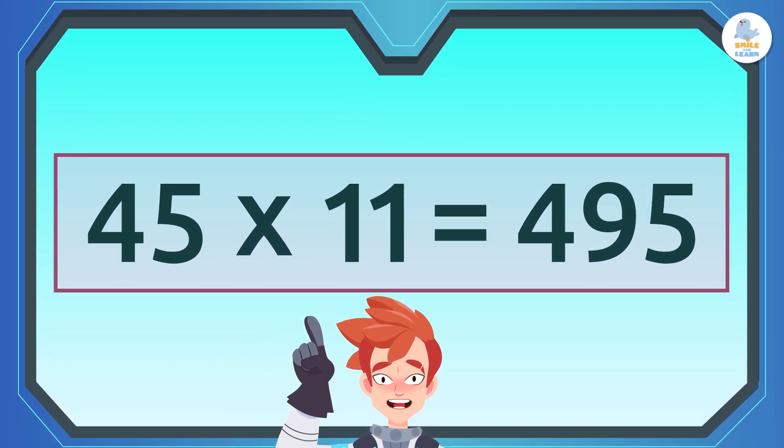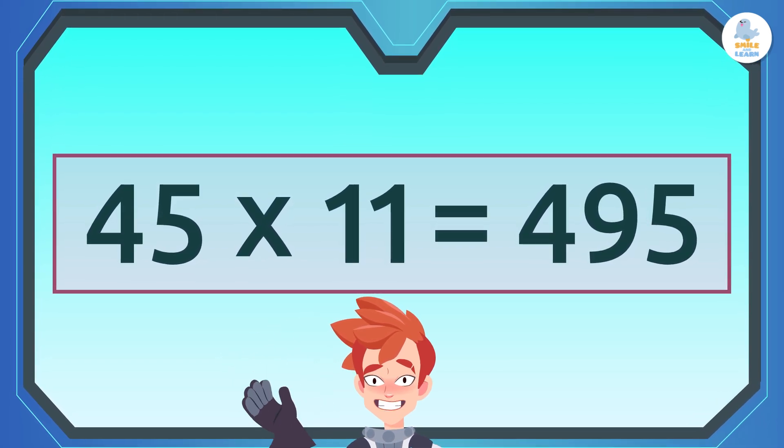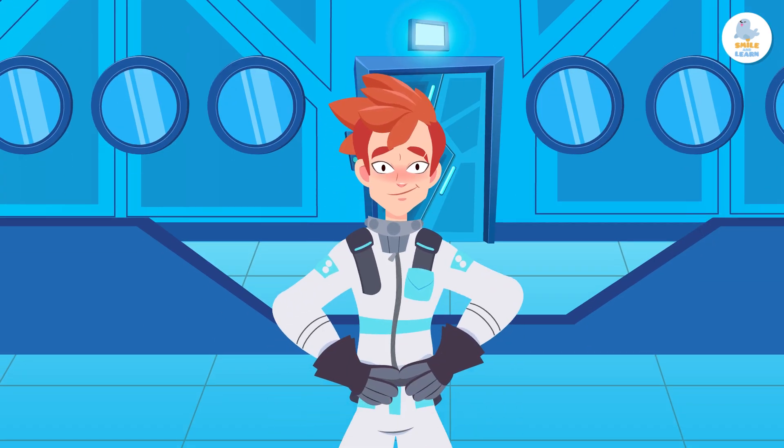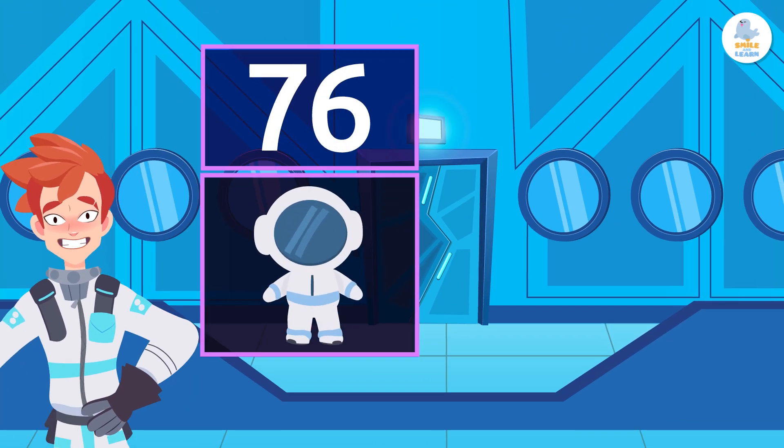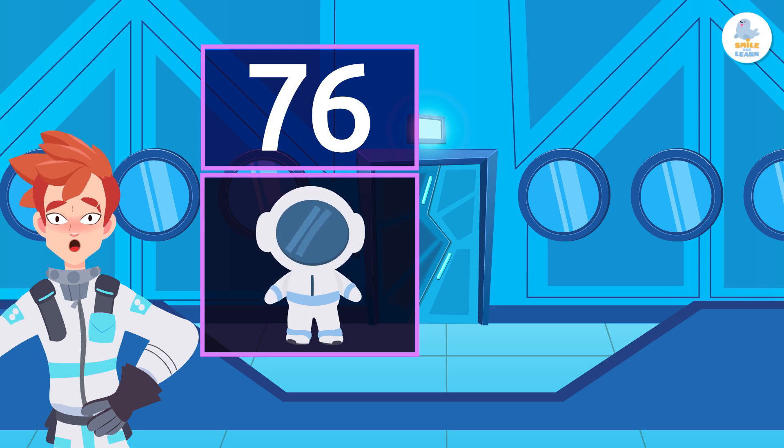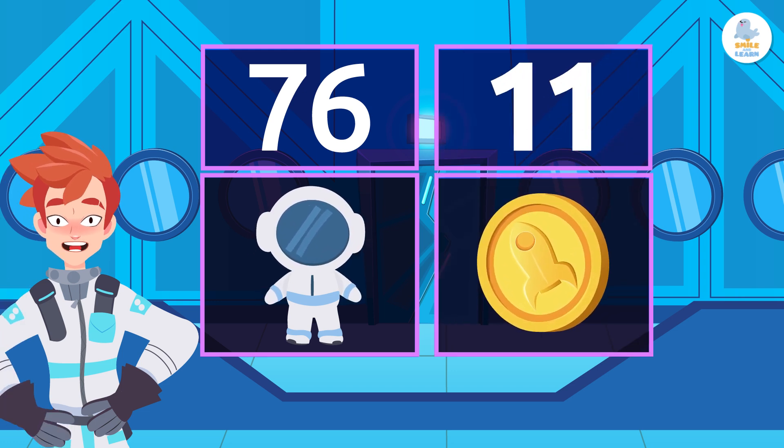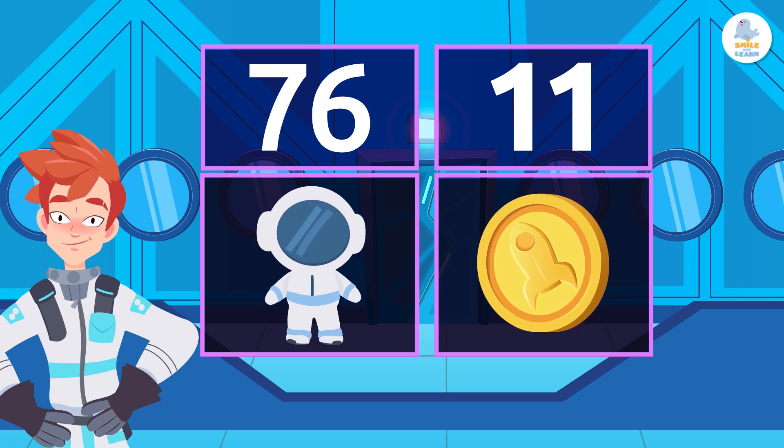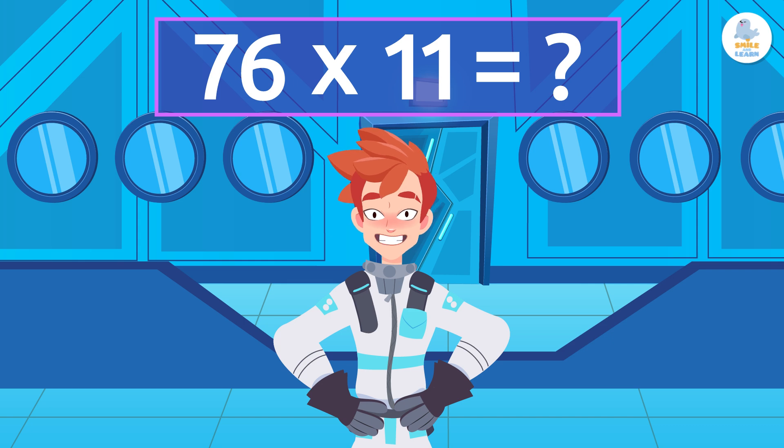See? It's a very simple way to do multiplication. If each of the 76 astronauts on the space station gives 11 coins for another astronaut's birthday present, how much money will they have in total? That's right! We have to multiply 76 times 11.